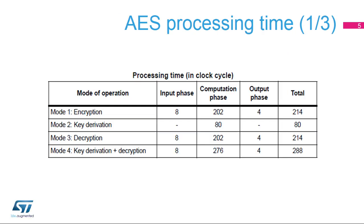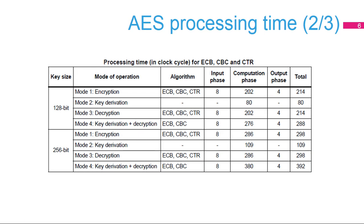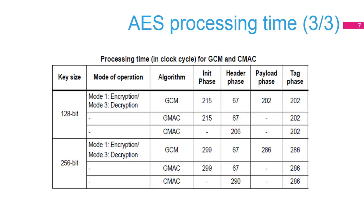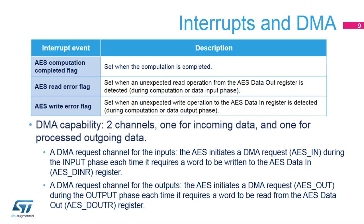The following slides give the processing times for each of the operating modes according to the selected chaining mode, depending on the key size and algorithms. Here are also the processing times for GCM and GMAC algorithms. Here is a summary of the events able to trigger an interrupt in the nested vectored interrupt controller: AES computation completed, AES read error, and AES write error.